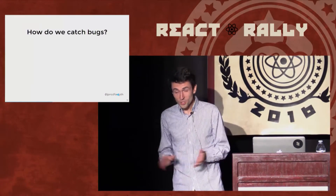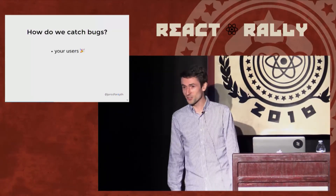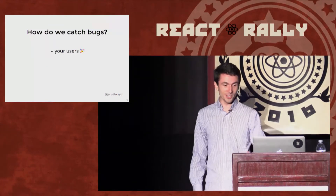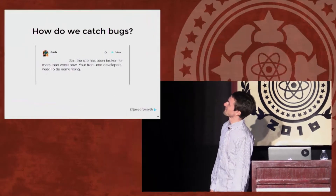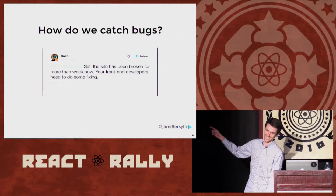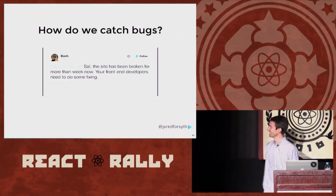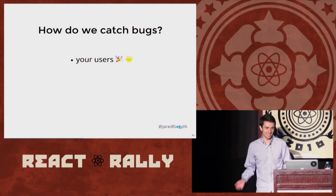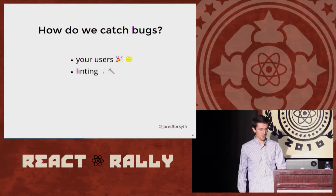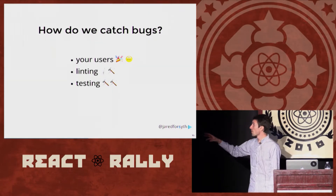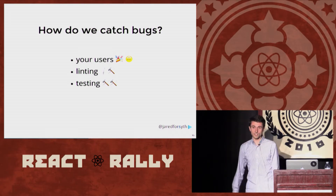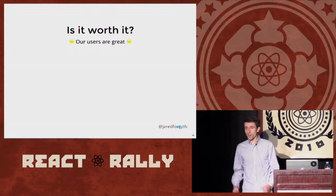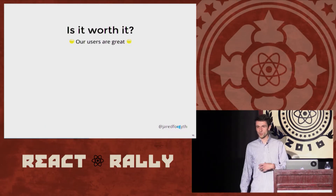So how do we catch bugs? Because we all know the answer to this — let your users do it. Push to production, they'll complain to you. Twitter is great for this. So maybe you don't want your users to actually see your bugs. There are a couple of things we can do: there's linting, there's testing. Both of these are something of a hassle, and so you have to ask yourself, is it worth it? Our users are nice, they like us — or I'm the only user.